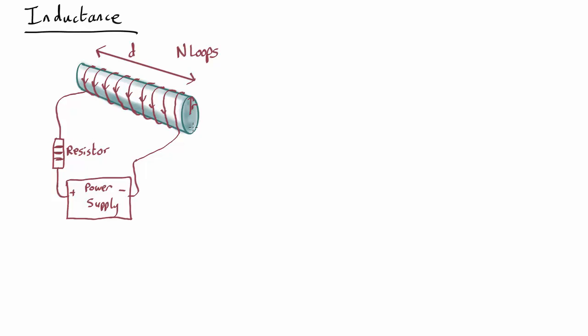Let's assume we have a cardboard cylinder here with wire looped around. We have n loops over a length d. When we turn it on, there will be a magnetic field coming through. How big is that magnetic field going to be? Well, we know from the equation for a solenoid that the magnetic field is going to be B = μ₀nI/d.